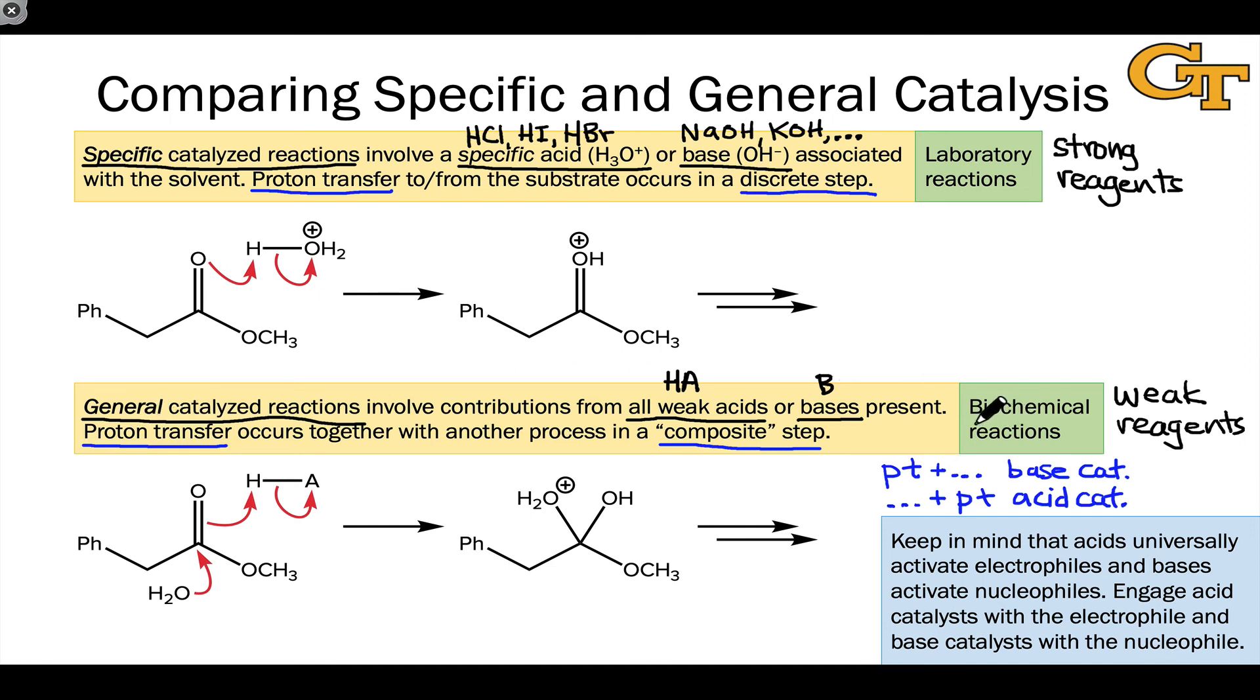And importantly, general catalysis is the norm in biochemical contexts. In biochemical systems, reaction mixtures are not clean. Reactions are occurring in the presence of all kinds of other molecules. And the avoidance of high-energy intermediates is very important to maintain the stability and fidelity of the biochemical system. For this reason, biochemical systems make use of general catalysis. And we'll see that in great detail when we talk about enzyme catalysis later in the course. These general acids and general bases are often found in the active sites of enzymes where they catalyze biochemical transformations.